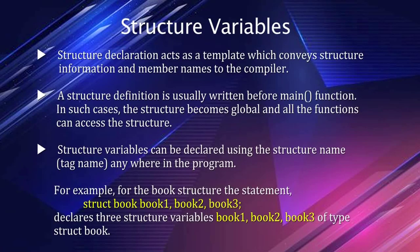Structure declaration acts as a template which conveys structure information and member names to the compiler. A structure definition is usually written before the main function, making it global so all functions can access it. We can declare structure variables using the structure tag name anywhere in the program. For example, the statement 'struct book book1, book2, book3' declares three structure variables of type struct book.